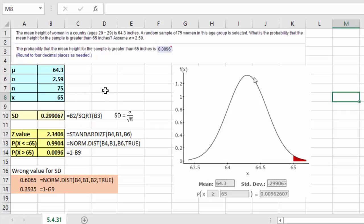Now here's where I think you went wrong. This information, the mean and the standard deviation, are given for the population of women in the country, but we are interested in the sample of 75. So we can't use the sigma of 2.59. We've got to come up with the standard error. We do that by using the formula: standard deviation of the sample is equal to sigma divided by the square root of n. That gives us a standard deviation of 0.299067.